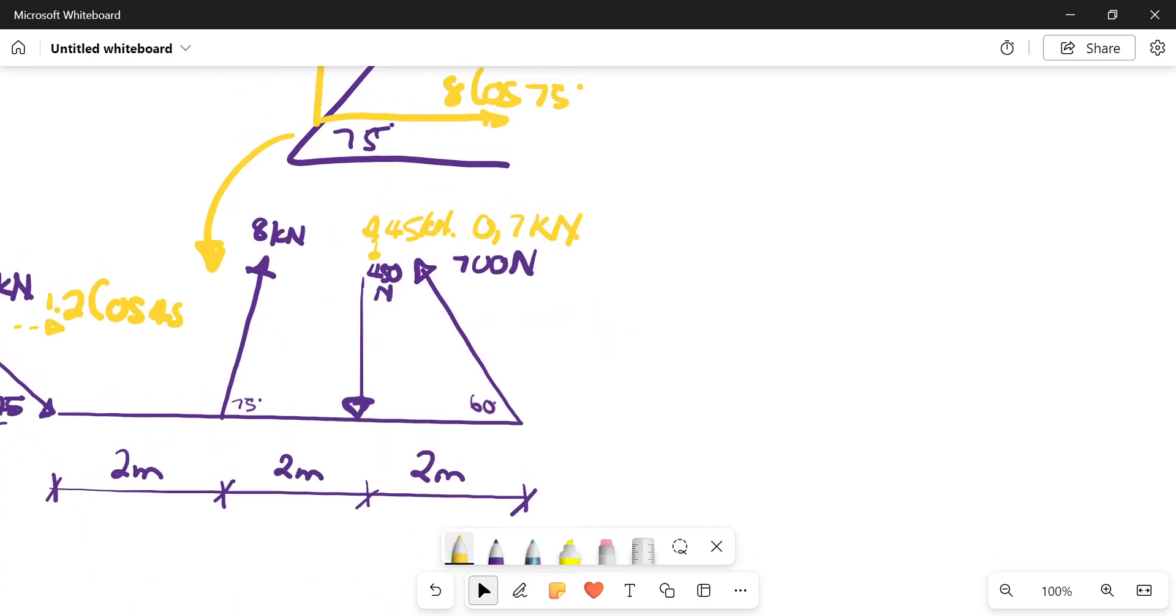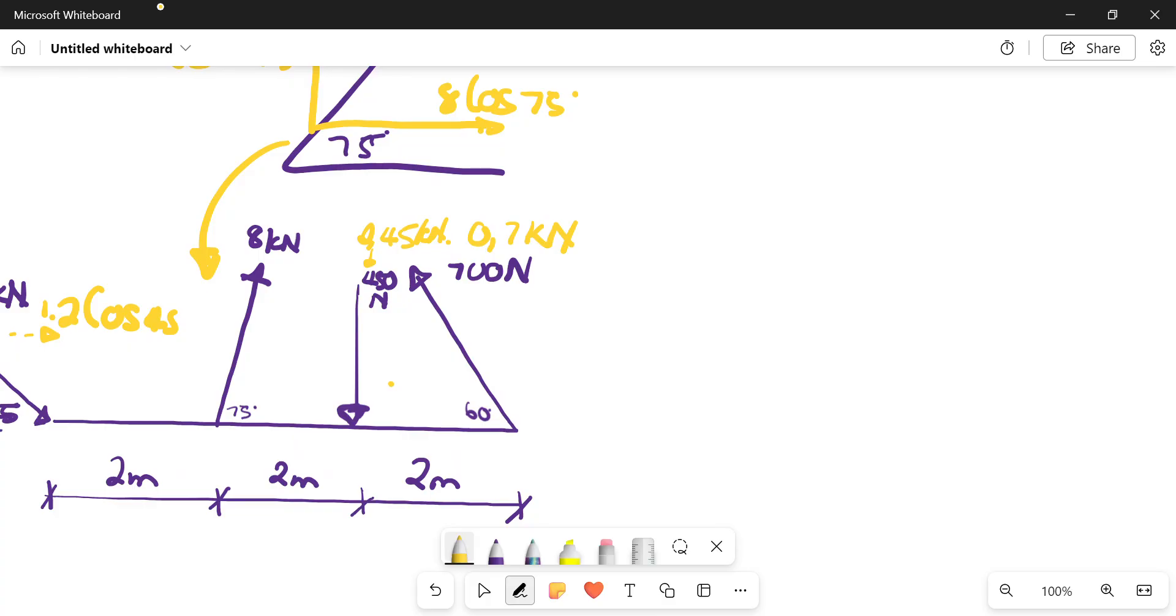That one is completely straight. This one they're pulling away as well: 0.7 sine of 60, 0.7 cos of 60. I hope this is visible and you're following.